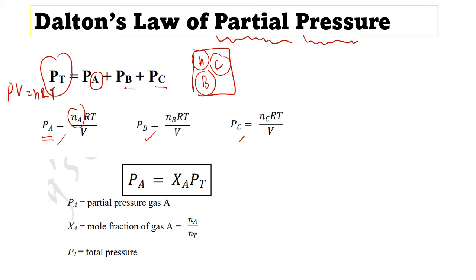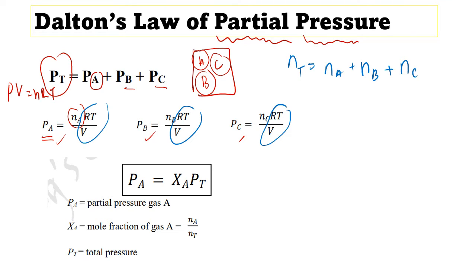We notice that RT/V is constant. So n_A + n_B + n_C equals n_total. Therefore we can write the total pressure formula as: P_total = n_total × RT/V. This is how we manipulate the ideal gas equation to find total pressure. One way to find the partial pressure of A is by using the ideal gas equation directly.